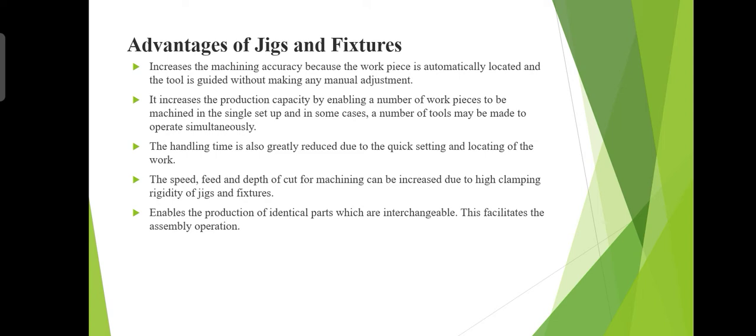Good morning students. In this lecture we will discuss advantages of jigs and fixtures. Before talking about advantages, we need to know something about jigs and fixtures. A jig holds and positions the work, and locates or guides the cutting tool with respect to the work piece. Mostly a jig is not fixed to the machine table, and it is lighter in construction compared to a fixture. Jigs are used in drilling, reaming, tapping, and counter boring operations.